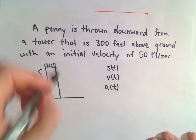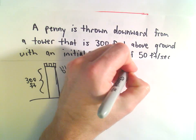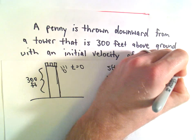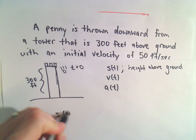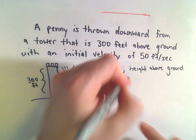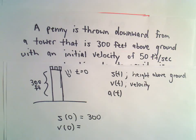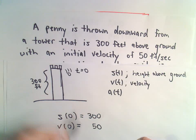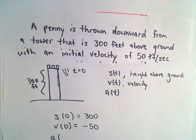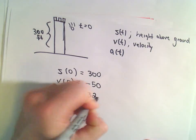We know a couple of things. At time zero — right when the penny gets dropped off — we'll think about S of t as the height above the ground. So S at t equals zero is 300 feet above the ground. The velocity at time zero is the initial velocity: 50 feet per second, but since we're throwing it downward, we give it a negative sign, so V(0) = -50. And the acceleration at any time t is constant: negative 32 feet per second squared.